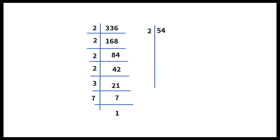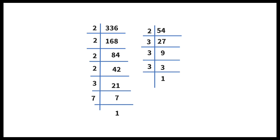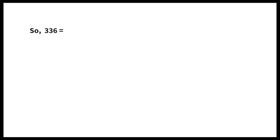54 is an even number, divisible by 2, giving 27. 27 is divisible by 3; 3 nines are 27. 3 threes are 9. 3 is a prime number; 3 ones are 3. So 336 is equal to 2 to the power of 4 into 3 into 7, and 54 is equal to 2 into 3 cubed.